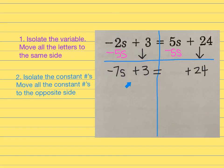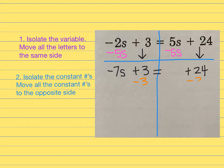On the left side I have a variable and a constant together — I can't have both, so I need to eliminate the constant and move it to the right side. The opposite of adding 3 is subtracting 3, so I subtract 3 from both sides. That cancels the 3 on the left. Then 24 minus 3 is 21, giving negative 7S equals 21.